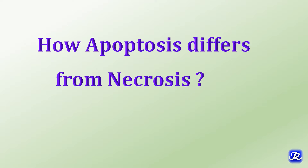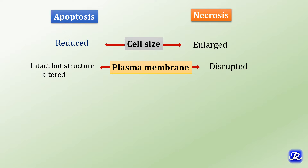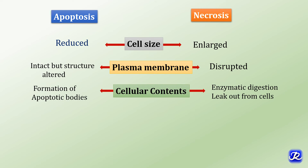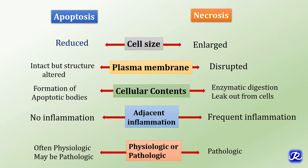Apoptosis differs from necrosis in several ways. Cell size is reduced in apoptosis but enlarged in necrosis. The plasma membrane is intact but altered in apoptosis, while it is disrupted in necrosis. Cellular contents disintegrate within apoptotic bodies without leaking, whereas in necrosis there is enzymatic digestion and cell contents leak out. There is no inflammation in apoptosis, but frequent inflammation in necrosis. Apoptosis is often physiological, while necrosis is always pathological.